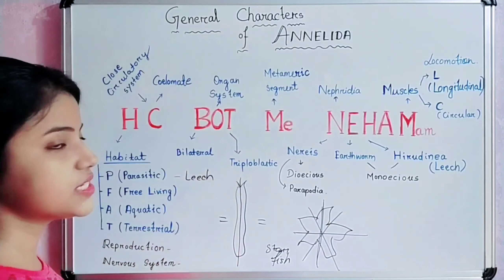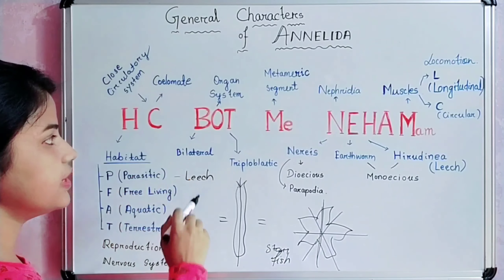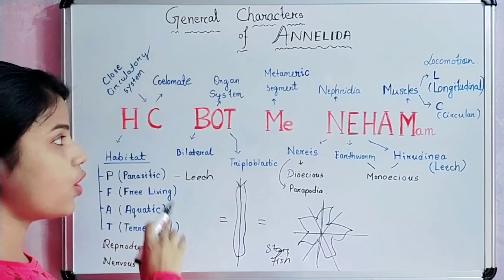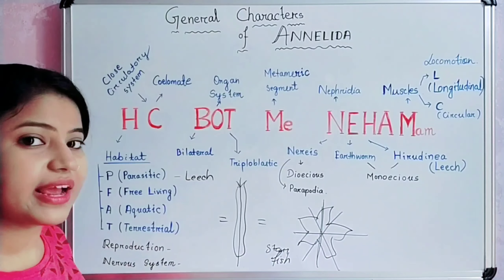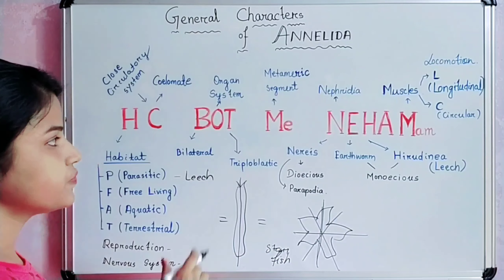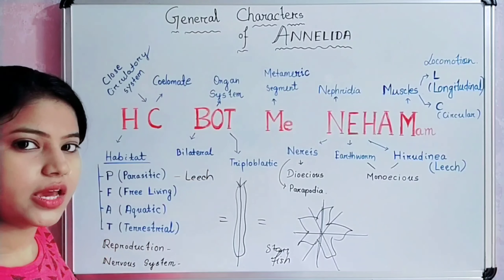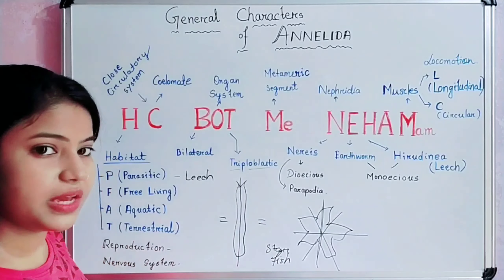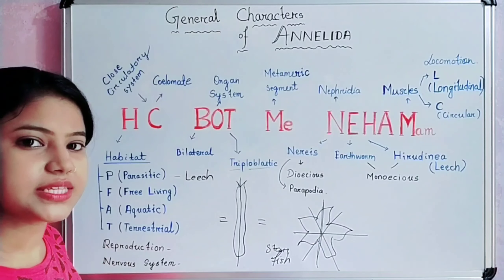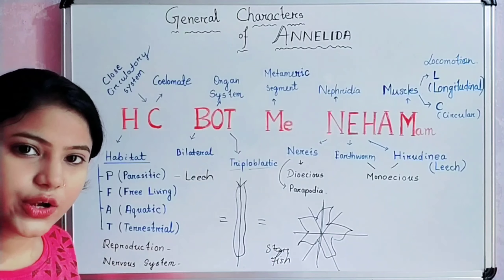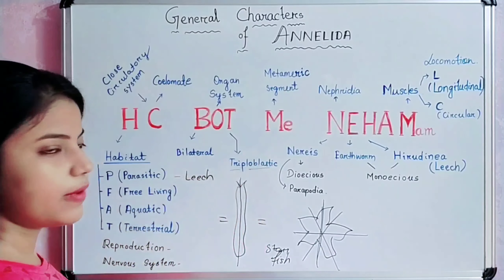The next one is O, which means Organ system. The body has an organ system level of organization. Then T means Triploblastic — three germ layers are present: Endoderm, Mesoderm, and Ectoderm. This is about Triploblastic.